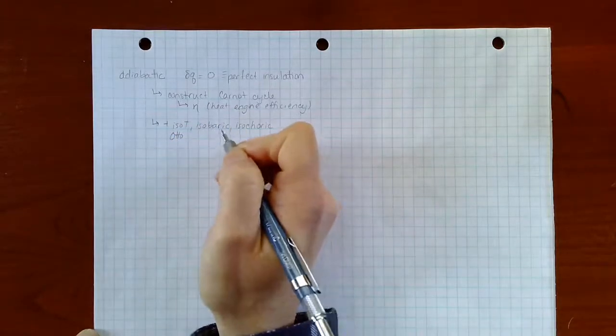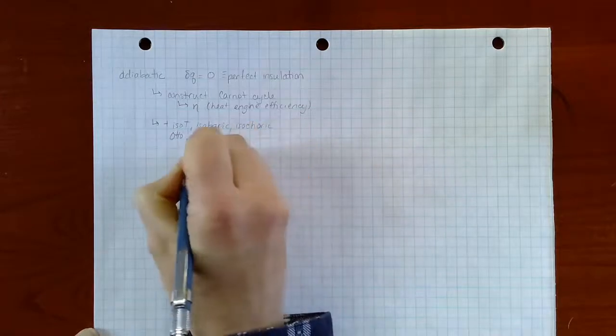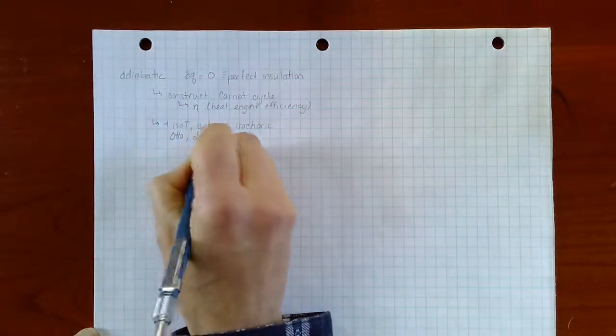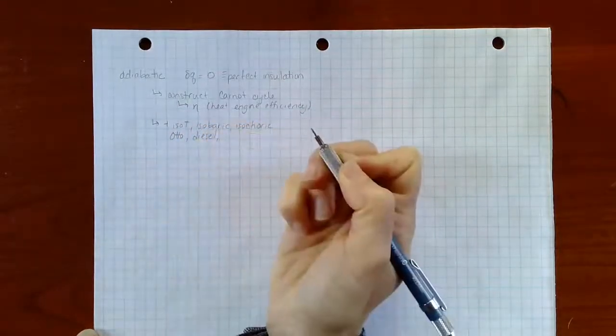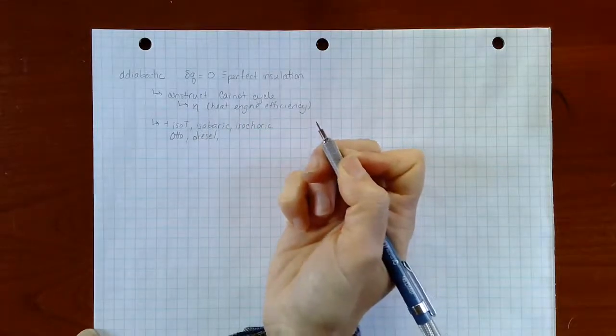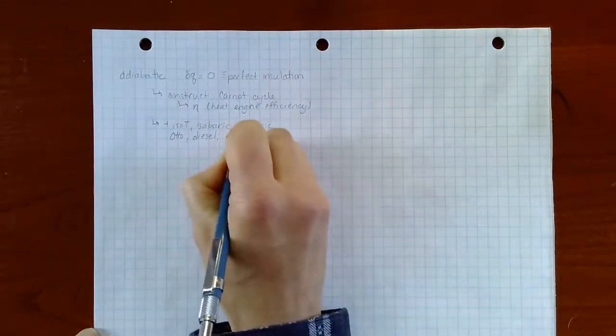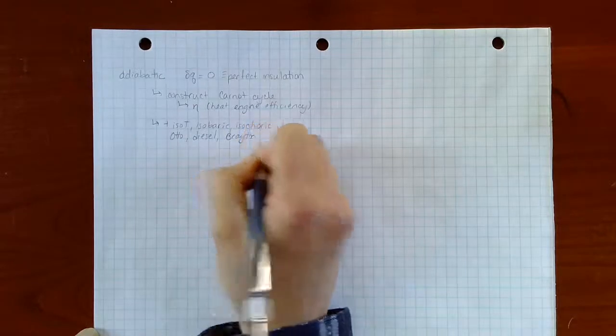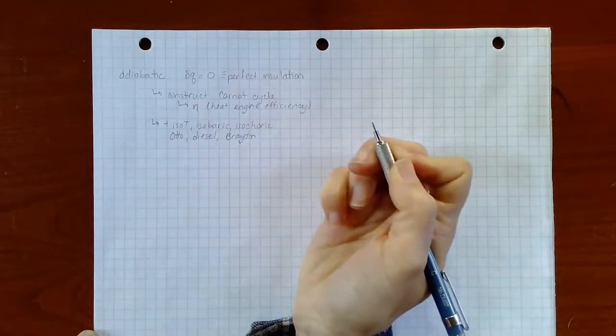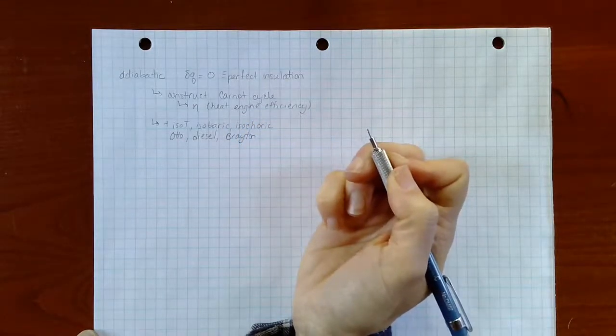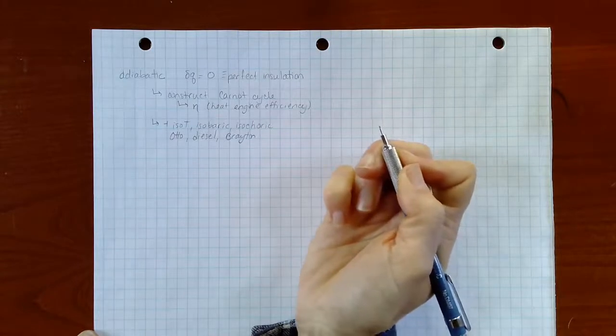The most important ones being the Otto cycle which describes our gasoline internal combustion engines, the diesel cycle which describes pressure ignition combustion engines, and the Brayton cycle which we use to describe constant flow turbines.